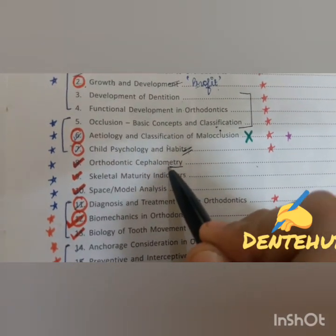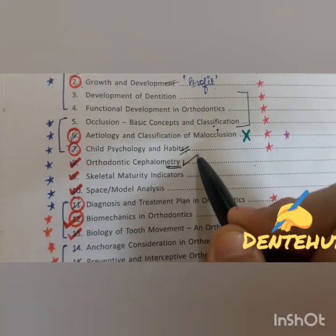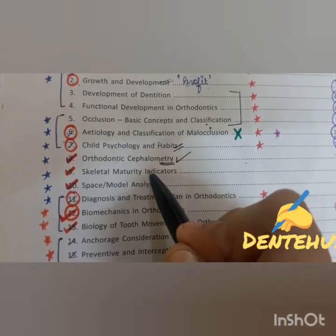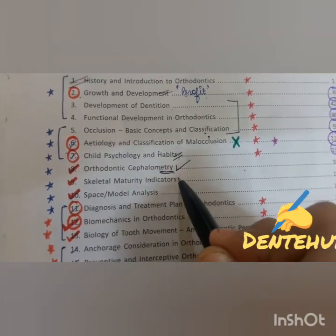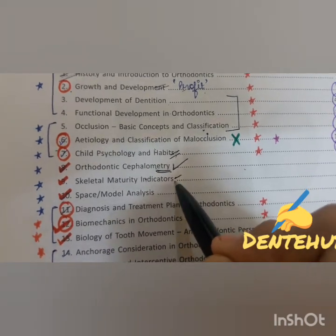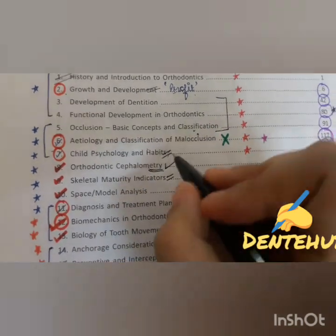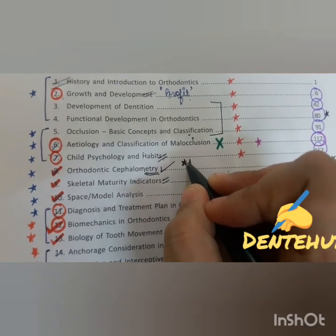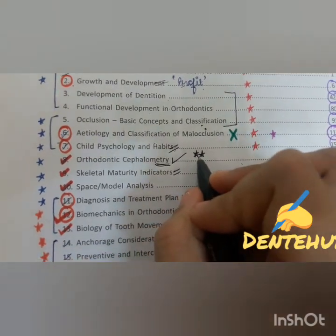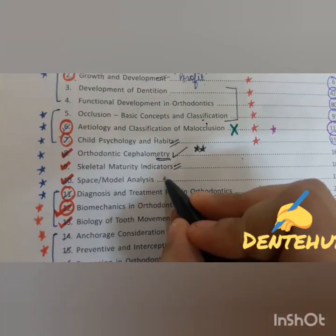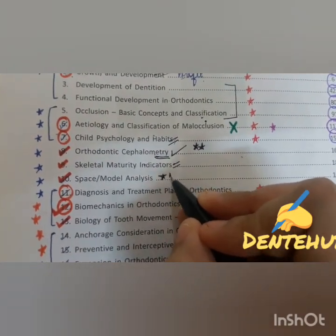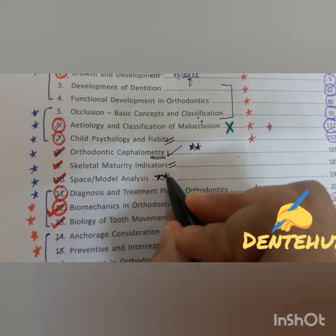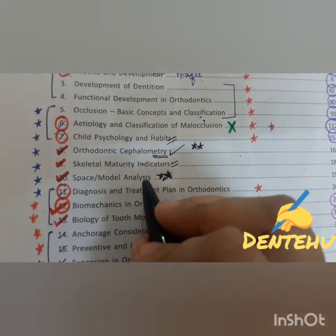Cephalometry is again an important topic that needs to be done along with skeletal maturity indicators. Skeletal maturity indicators are not so important, but cephalometry needs to be done properly. Space and model analysis is very much important, and you can look up images from the internet whenever you are doing these analyses.